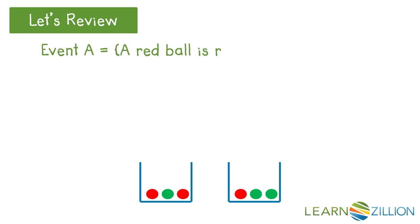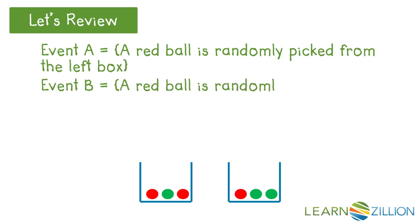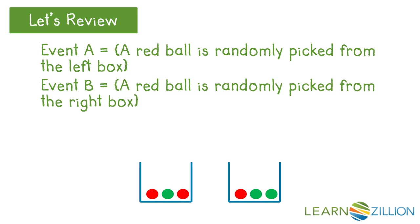Event A: a red ball is randomly picked from the left box. In event B, a red ball is randomly picked from the right box. If a red ball is picked from the left box, does that affect the likelihood of a red ball being picked from the right box? That's the idea of independence.